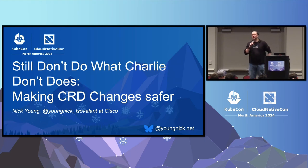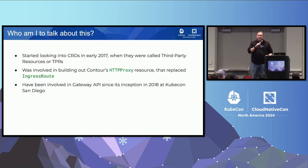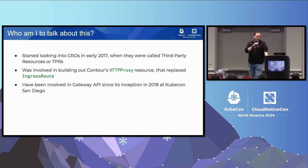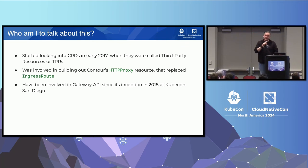My name is Nick Young. I am a senior software engineer at Isovalent at Cisco. Relevant to the question of who is this guy and why is he yelling at me about CRD design: I started looking into CRDs very early on in 2017 when they were still called third party resources. When I was working on Contour, I did a bunch of design work on the HTTP proxy resource, which was a replacement for the ingress route resource. And I've also been involved in Gateway API since its inception in 2019 — it is five years this year, five years next week since we started Gateway API.